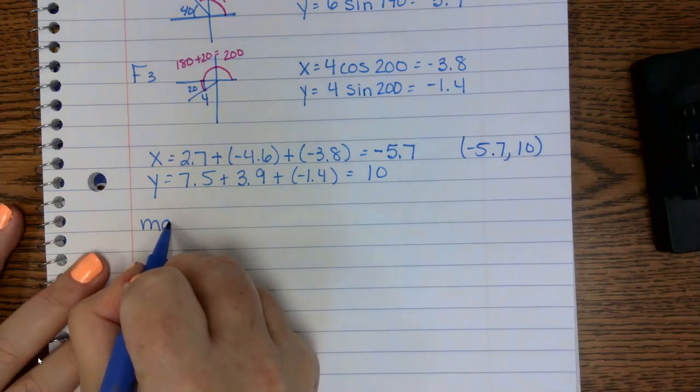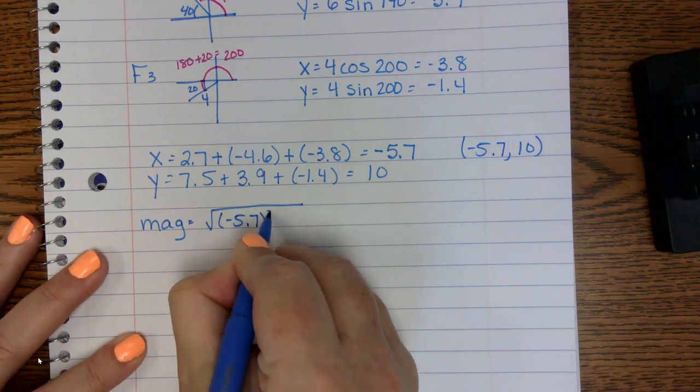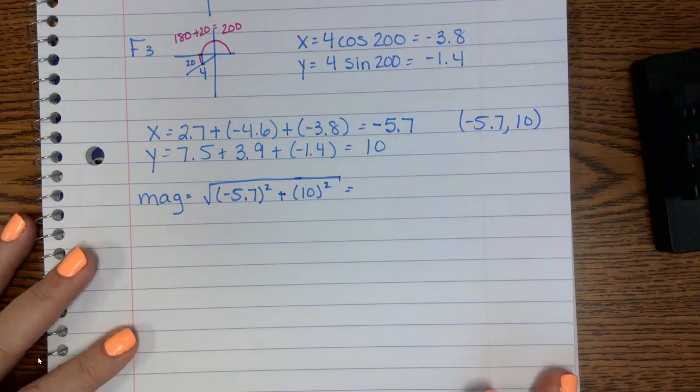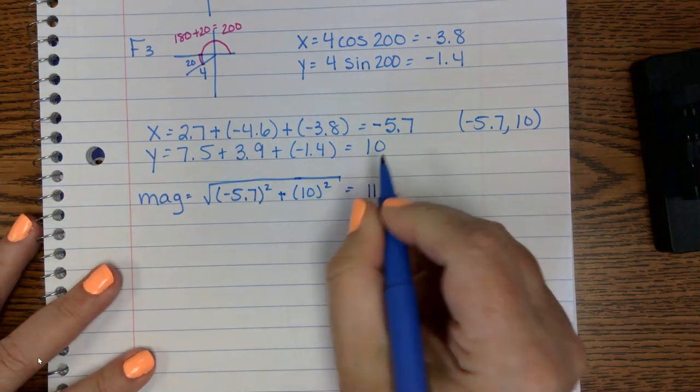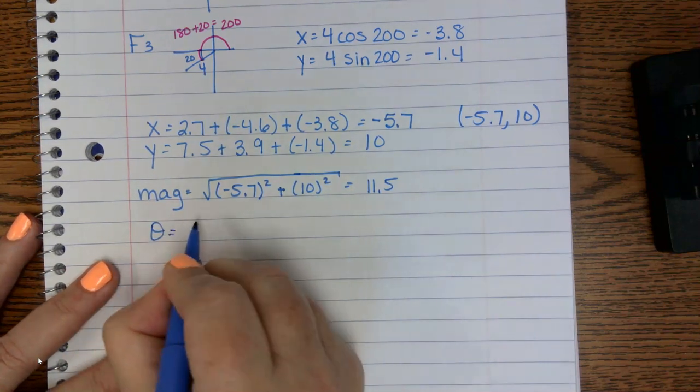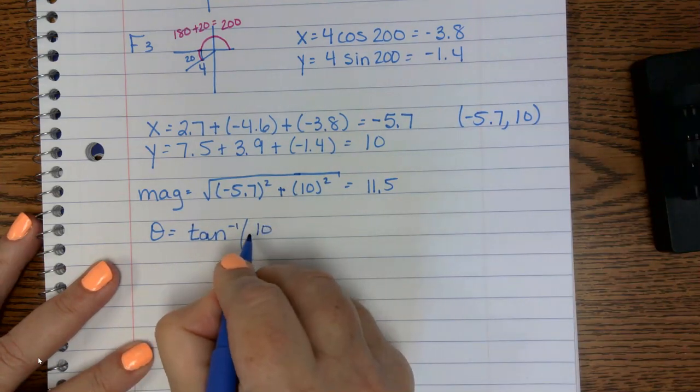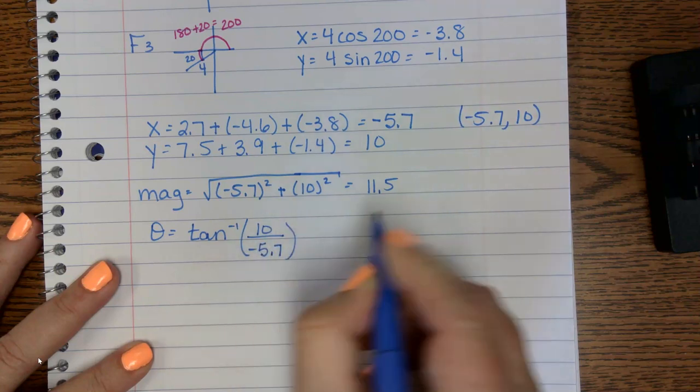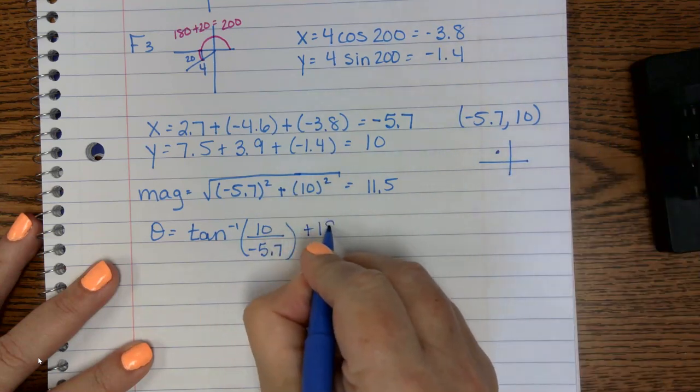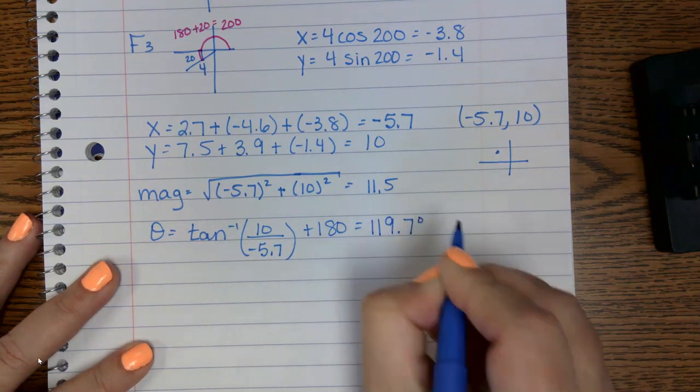So we're going to find our magnitude. Negative 5.7 squared plus 10 squared. We're going to throw this into our calculator and get 11.5. And then we're going to find our angle. Inverse tangent, y over x. And notice here if I graph this. Negative, positive. I'm in quadrant 2. So I'm going to have to add 180. And when I do that, I get 119.7 degrees.